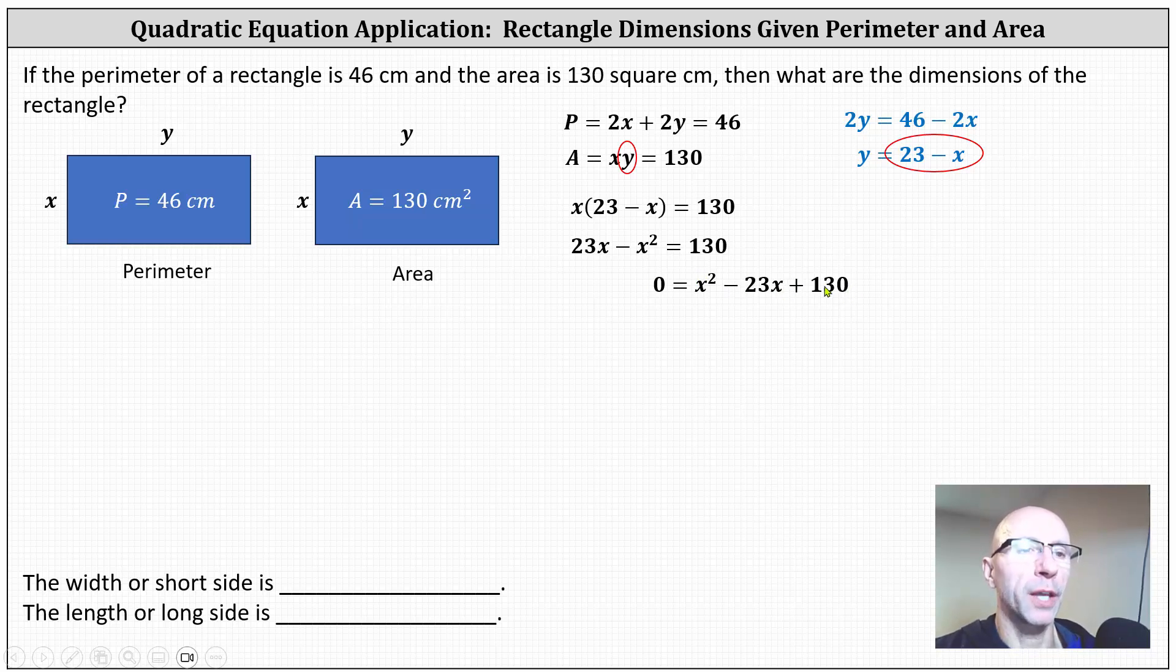Now let's see if we can factor this. If it does factor, it will factor to two binomial factors. And because the first term is x squared, we have an x in the first positions of both binomials. Now to find the constant terms of the binomials, we need to find the factors of positive 130 that add to negative 23. Because we have a positive product and a negative sum, we know we have to use two negative factors of 130.